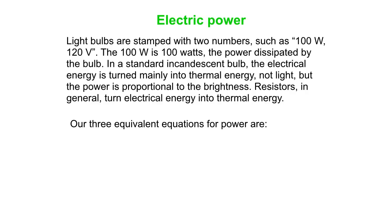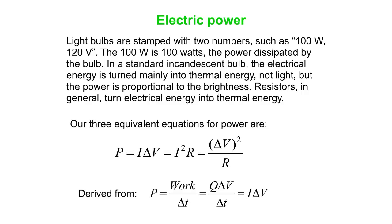We have three equivalent equations for power, and they are these: Power is I delta V, or I squared R, or delta V squared over R, and that comes from this. Power is work over time, and work in the sense of electrical charges is charge times the voltage, but charge per unit time is current, so that's where the I delta V comes from. And then the other versions come from bringing in Ohm's law with the I delta V. For instance, delta V is IR.